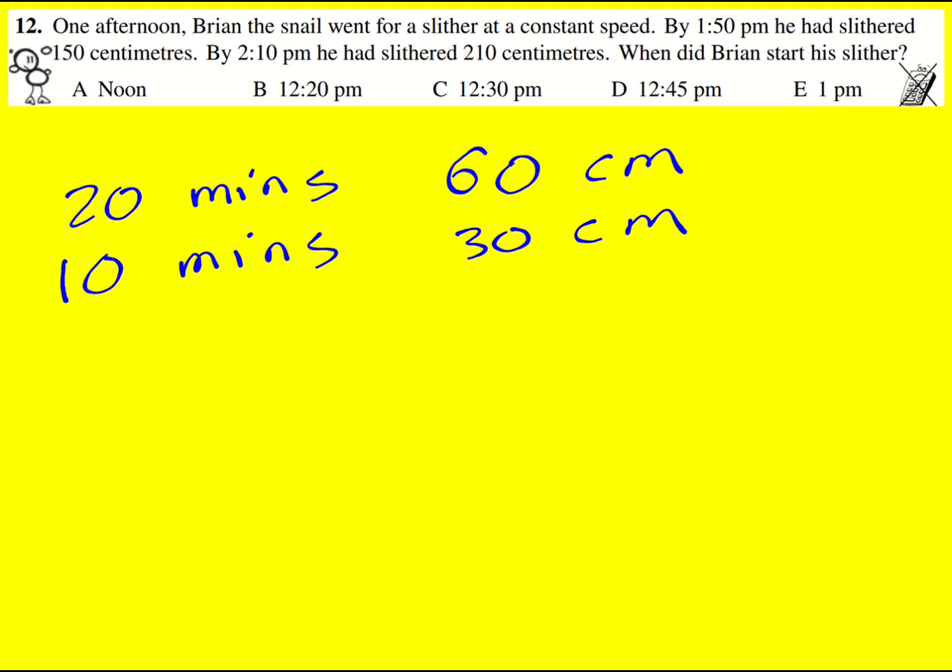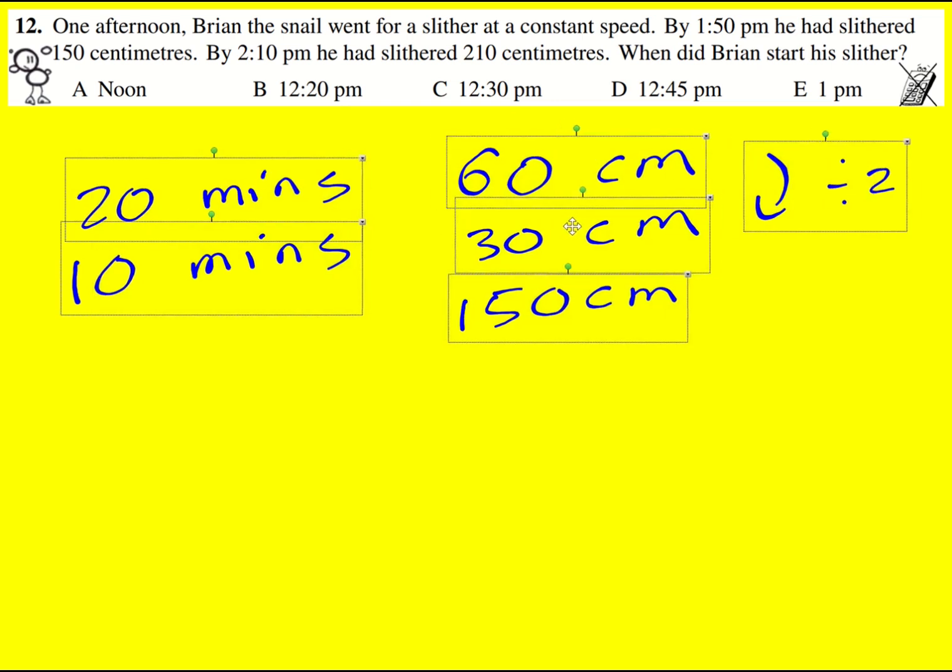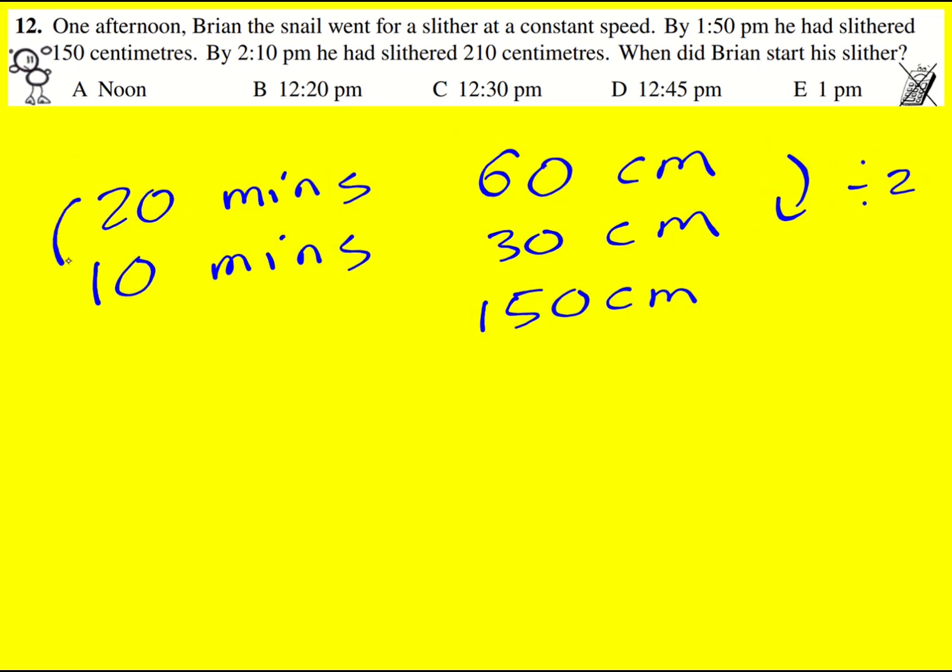So I can now work out how long it took him to go 150 centimeters because I can just times by 5. Maybe I should have written down what I'm doing. I'm dividing by 2. This is a proportion question, so no problem with that. Divide this by 2.